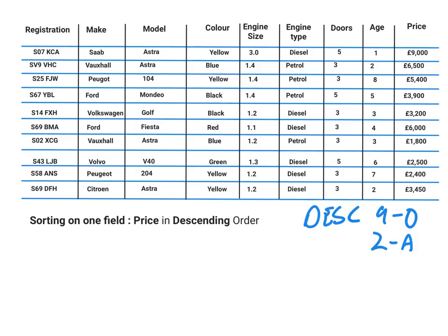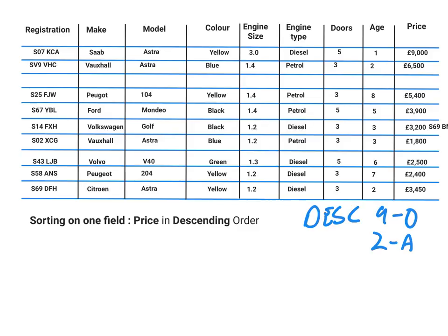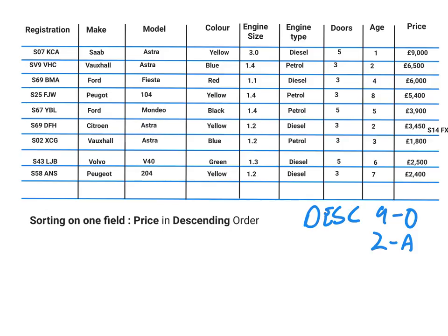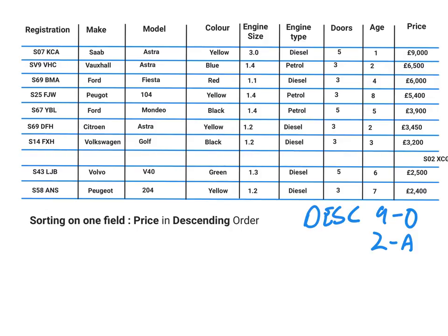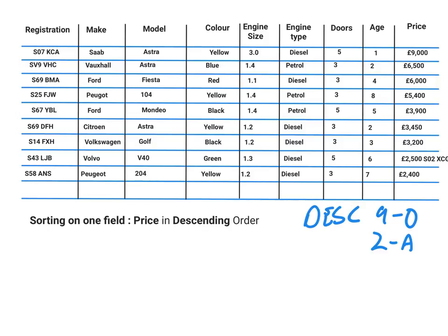The next one will be the 6,500 Vauxhall, which is already in place. The next one would be the 6,000, so we're going to drag those down. The next one would be the 5,400 Peugeot, which is already there. Then the 3,900 Ford, 3,200. We are missing the 3,450 value which needs to go up, then 2,500, and 1,800 would come to the bottom. You'll notice it's now sorted on the price in descending order, so the highest value is at the top and the lowest value is at the bottom.